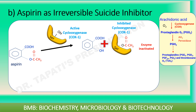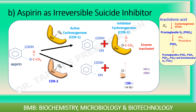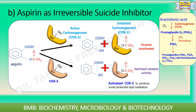Aspirin irreversibly inactivates COX-1, whereas in the case of COX-2, aspirin eliminates its ability to generate prostaglandins but switches on its capacity to produce novel protective lipid mediators.